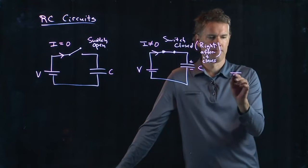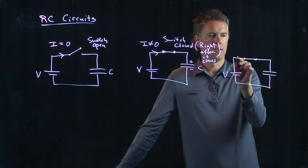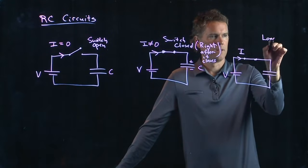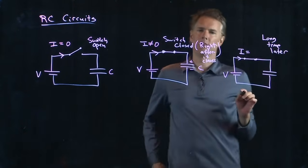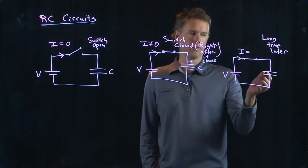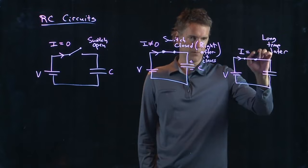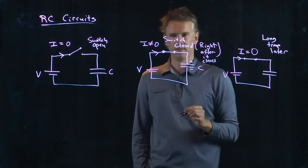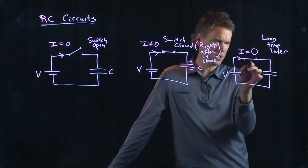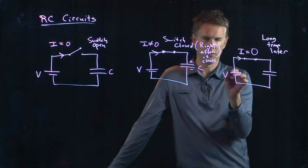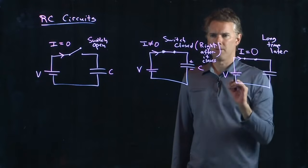All right. Now we wait a long time. The switch has been closed for a while. A long time later. Is there any current flowing in that circuit? What is the current flowing in that circuit if we wait for a long time? Somebody wants to say it. It's zero again. Why is it zero? I mean, I've made this connection here, right? I have a voltage in this battery that wants to push current around. And yet, we're saying if we wait a long time, it goes to zero. Why is that?